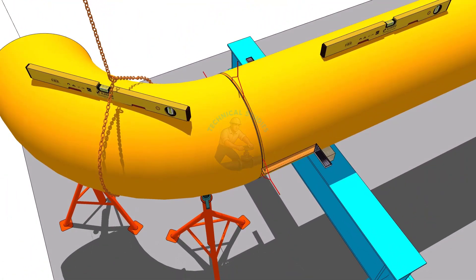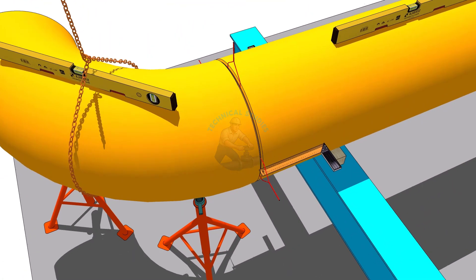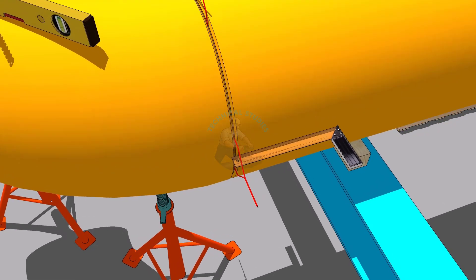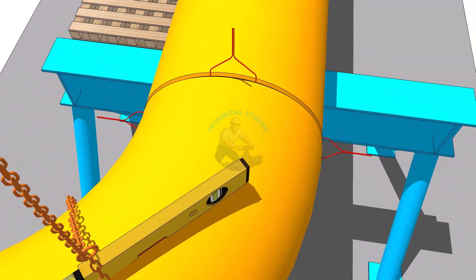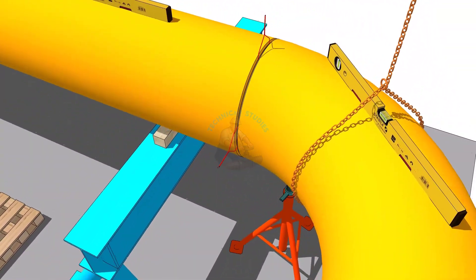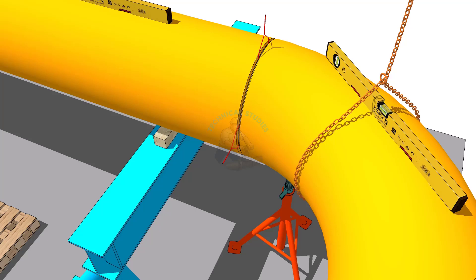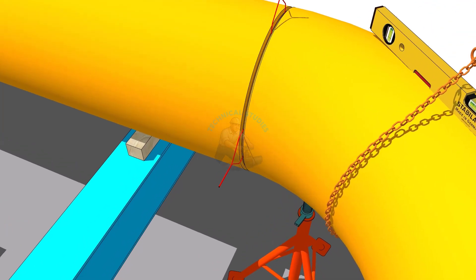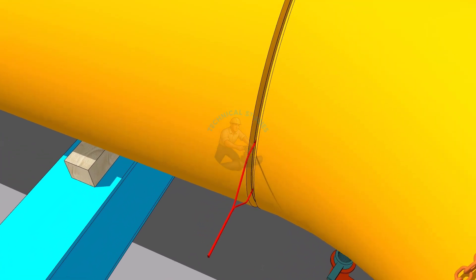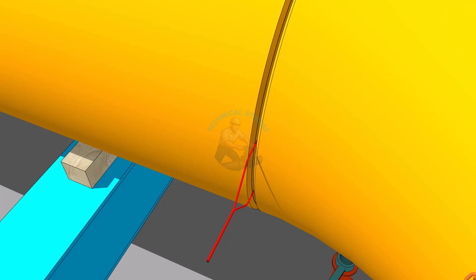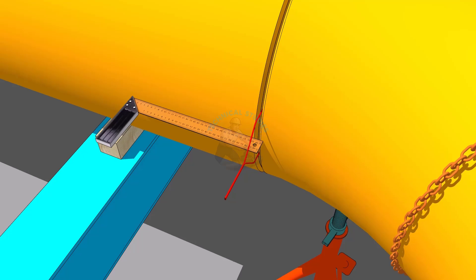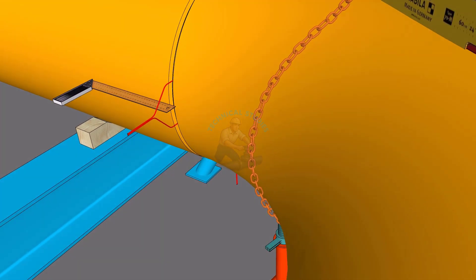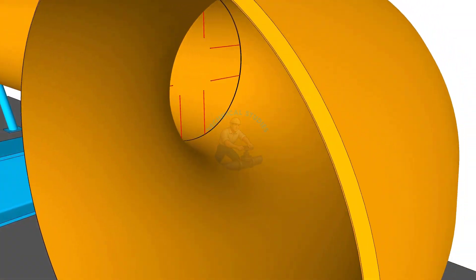Check the overlap between the pipe and the elbow. You must correct the overlap from inside the joint.